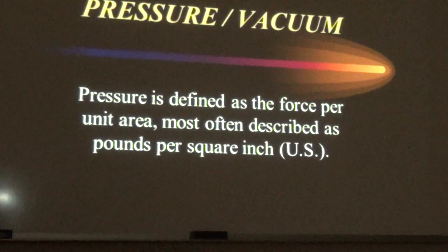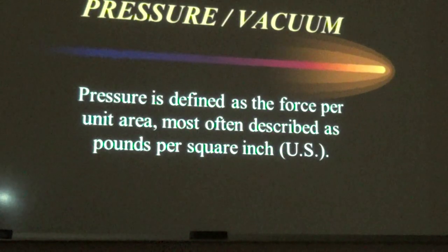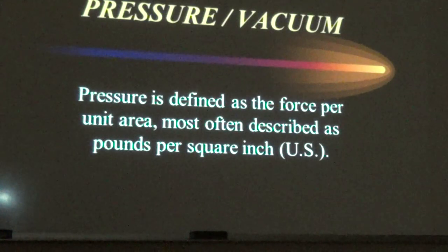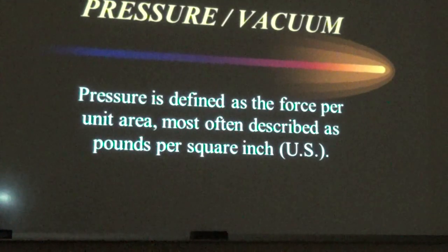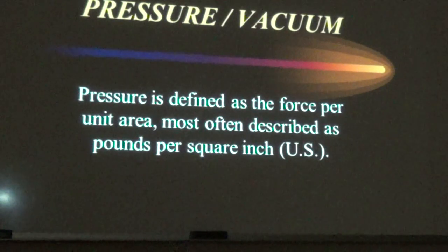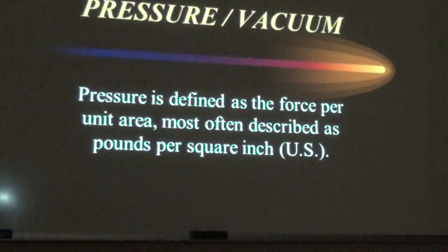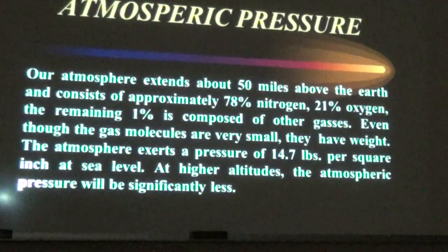In this presentation they spend a lot of time on pressure and vacuum, so expect test questions there. Pressure is defined as force per square inch — PSI. We're going to talk about PSIG, PSIA, millimeters of vacuum, and inches of vacuum. Atmospheric pressure at sea level is 14.7 pounds per square inch — that's the weight of the air column above us pressing down.